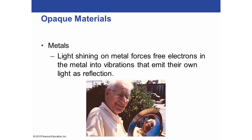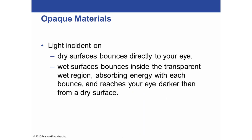Metals are also opaque. Light shining on a metal forces free electrons into vibration, and they emit their own light as a reflection — that's why you see a reflection when you look at metal. Light bouncing off a dry surface reflects directly to your eye, while light hitting a wet surface bounces inside the transparent wet region, losing energy with each bounce, and reaches your eye darker than light reflected from a dry surface.